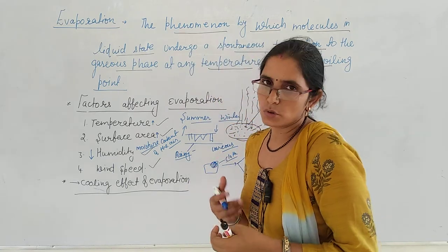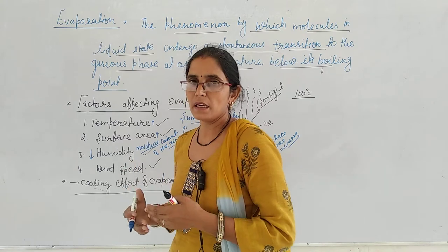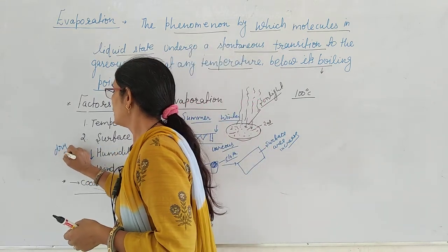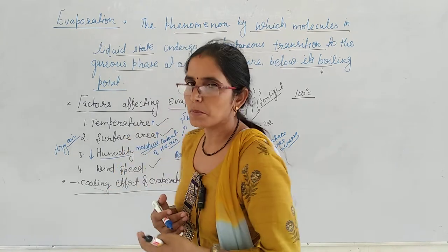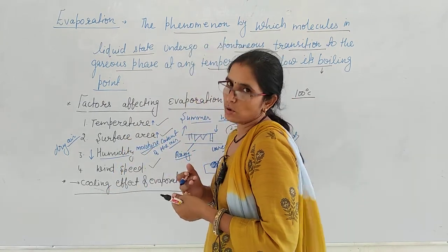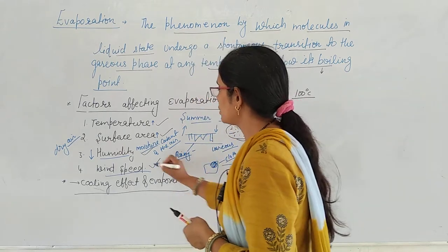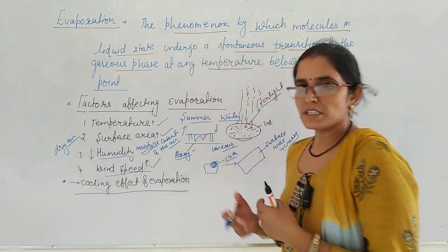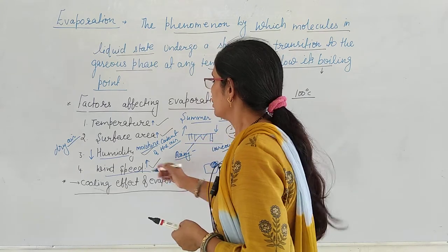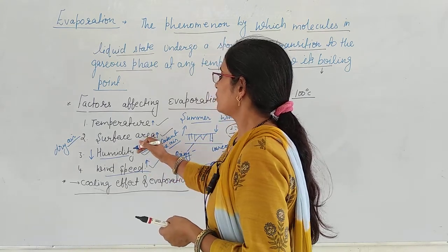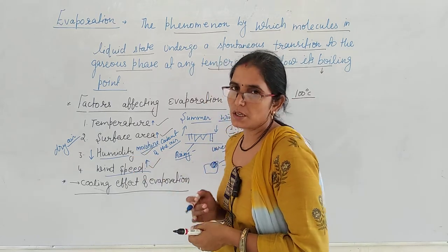When the moisture content is already high in the air — the air is already full — it cannot take more water from the clothes, so evaporation decreases. When humidity in the air increases, it reduces the rate of evaporation. The fourth factor is wind speed. Higher wind speed increases evaporation by carrying away moist air and replacing it with drier air.